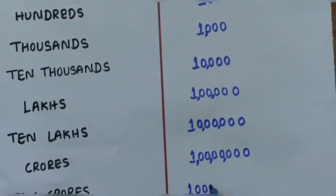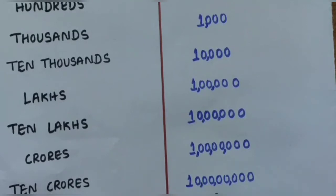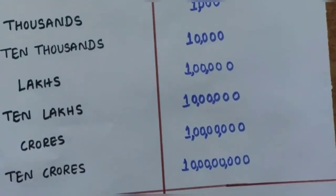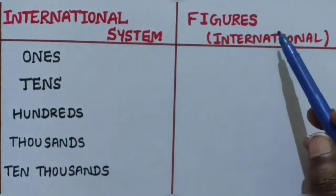Ten Crores is written as 10,00,00,000 - that is one followed by eight zeros. Next, we move to the International System of Numeration and its figures.